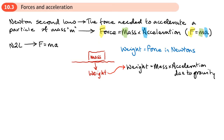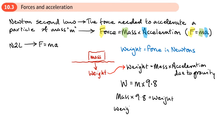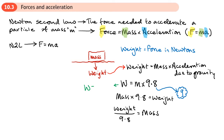Sometimes we're given weight, sometimes mass, and sometimes we need to convert between the two. If we have the weight W, that equals the mass m times the acceleration due to gravity, 9.8. So mass times 9.8 equals weight, and weight divided by 9.8 equals mass. Because we use the acceleration due to gravity a lot, it may be easier to represent 9.8 with the letter g.